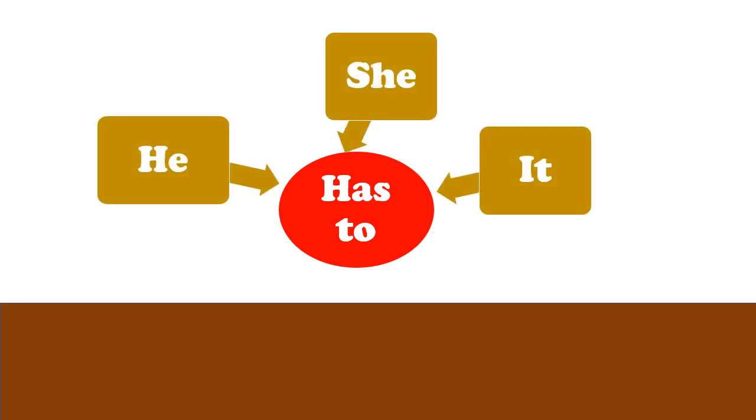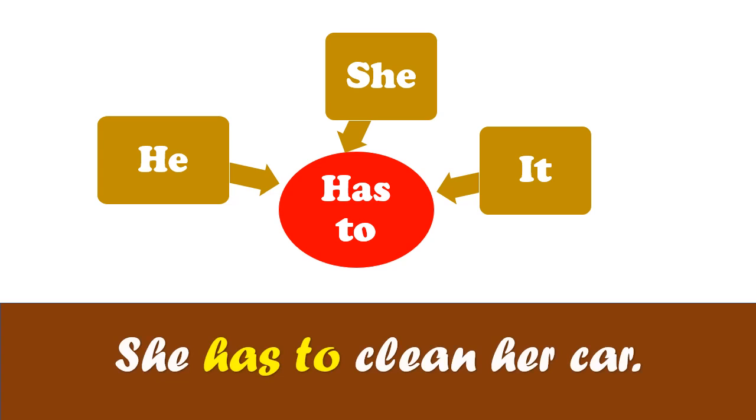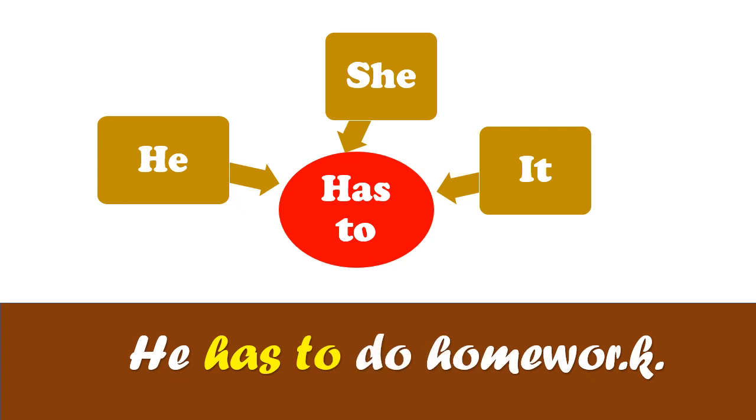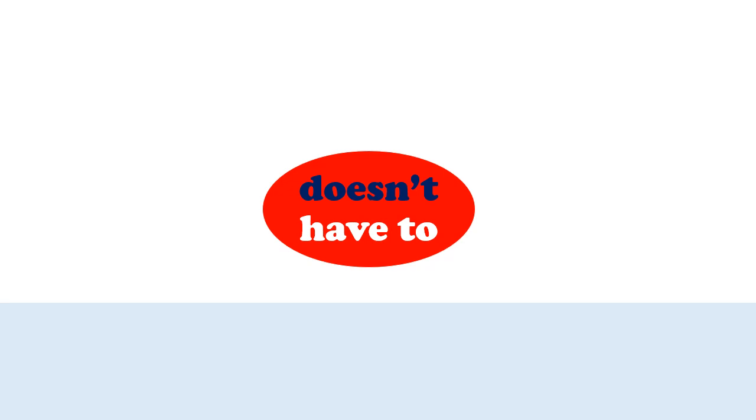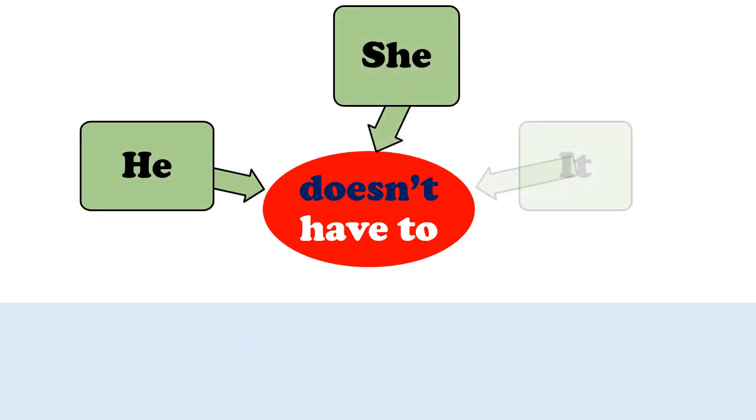Has to. Has to goes with he, she, it. Look at my example. She has to clean her car. You can see, he has to. Another one: He has to do homework. Right? Negative sentence. Look. We use DOESN'T. And has to returns to have to. Yeah. You can see: He, she, it with doesn't have to. Right?